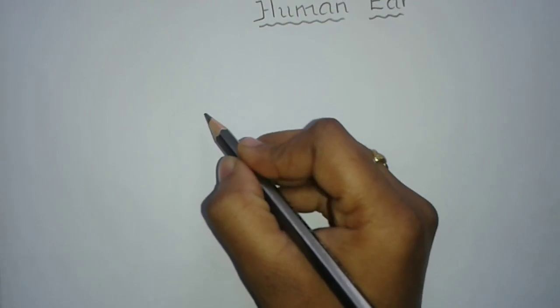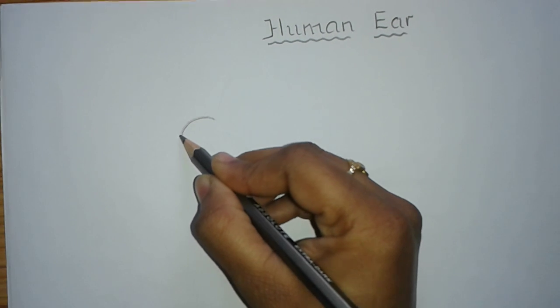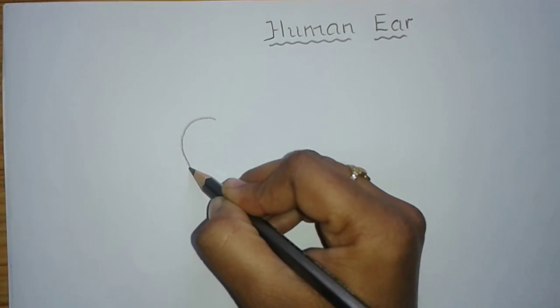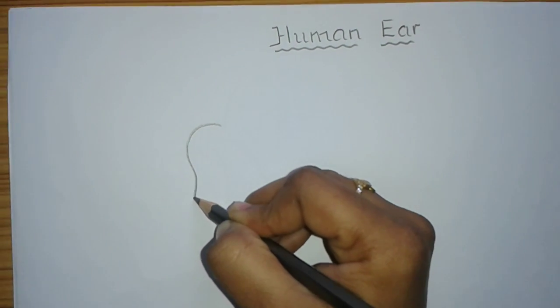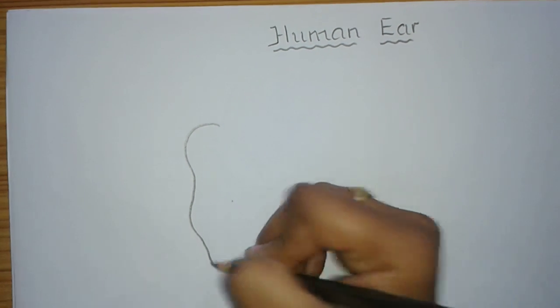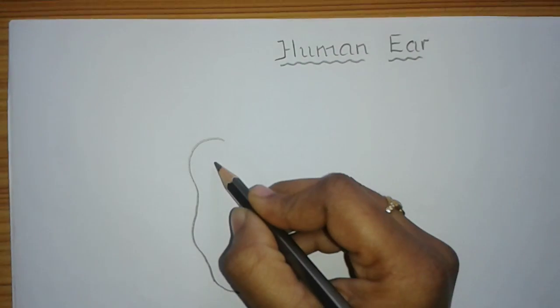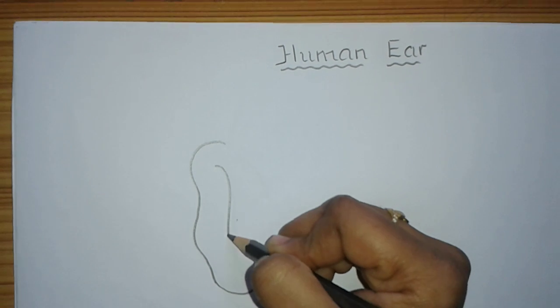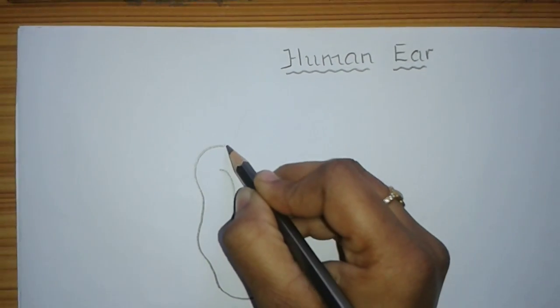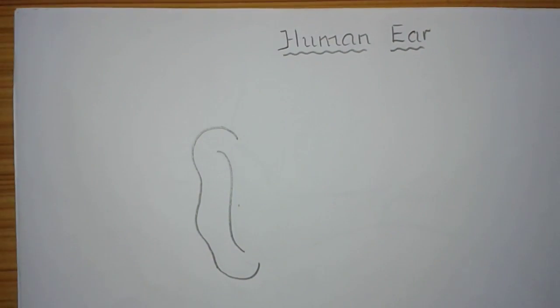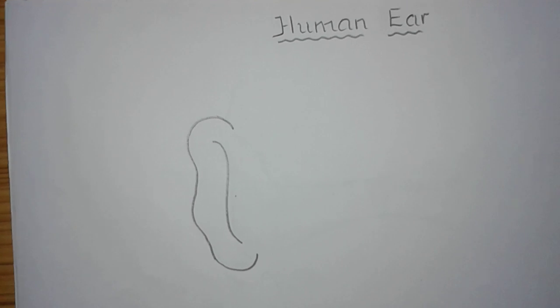First let us draw the pinna which collects the sound waves and directs them into the auditory canal. So children, draw the pinna like this. Inside the pinna, just draw an S-shaped curve. This pinna collects the sound waves and directs them into the auditory canal.